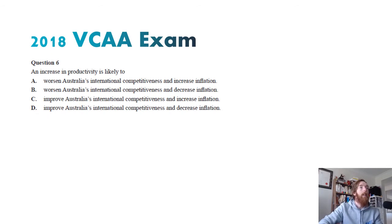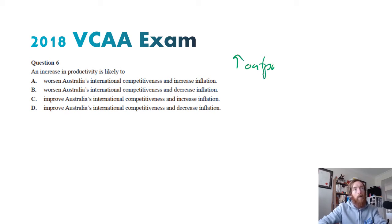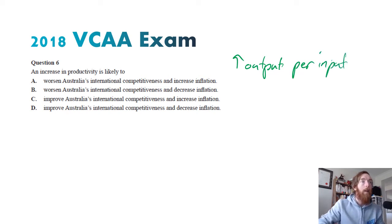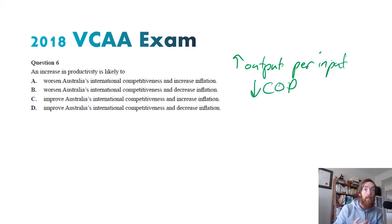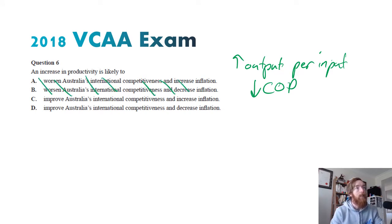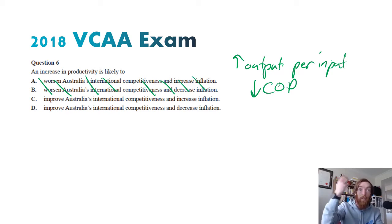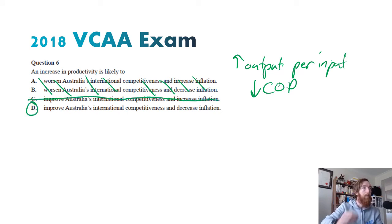Question six — an increase in productivity is likely to do what? If we increase productivity, we get more output per unit of input, which lowers our cost of production and makes us more internationally competitive. We can rule out options A and B. With lower cost of production, lower prices should be passed on and there's less cost-inflationary pressure, so it won't increase inflation either. The answer is D — improve Australia's international competitiveness and decrease inflation.